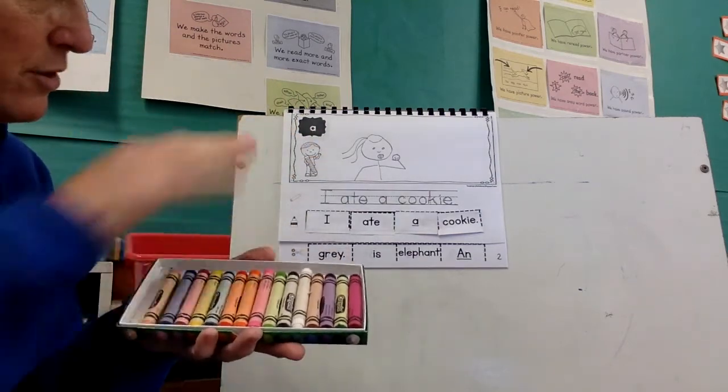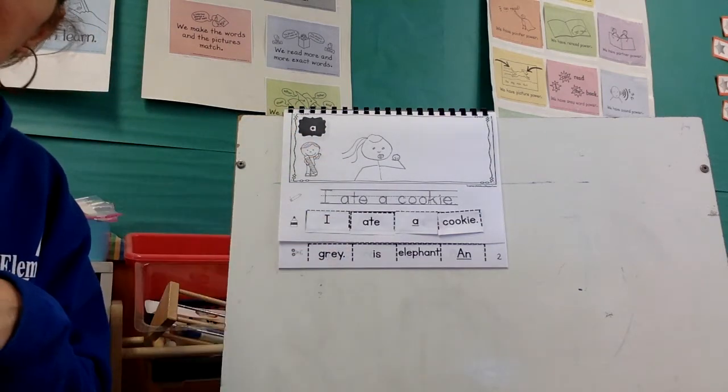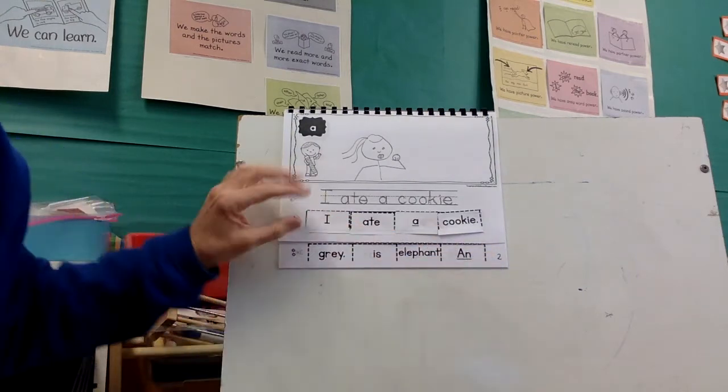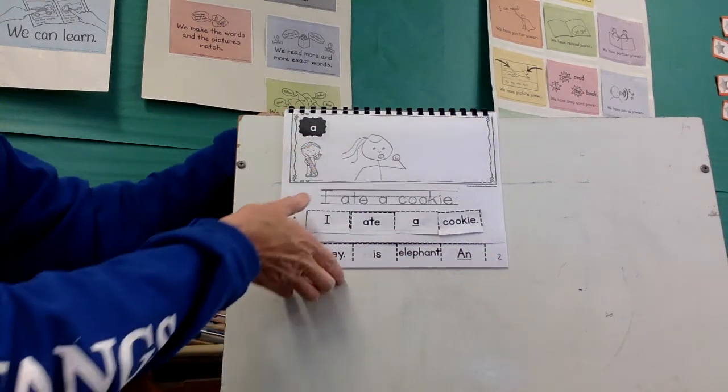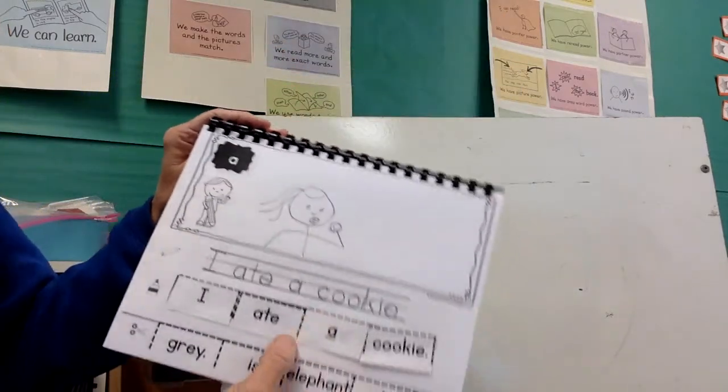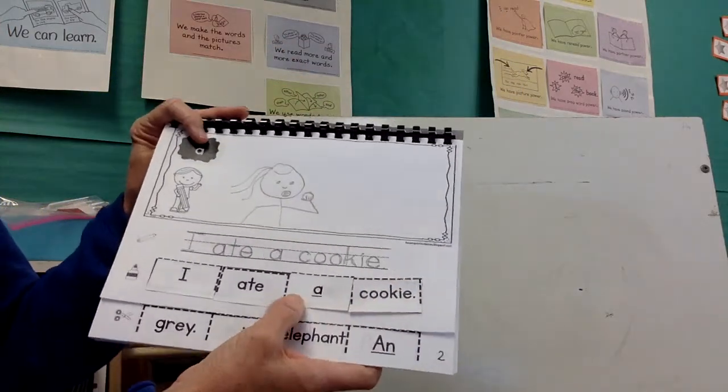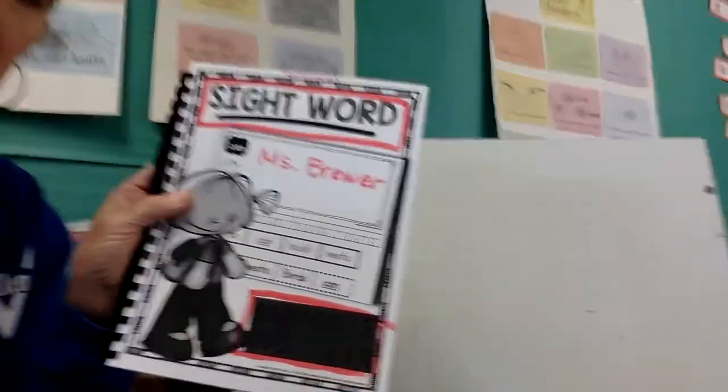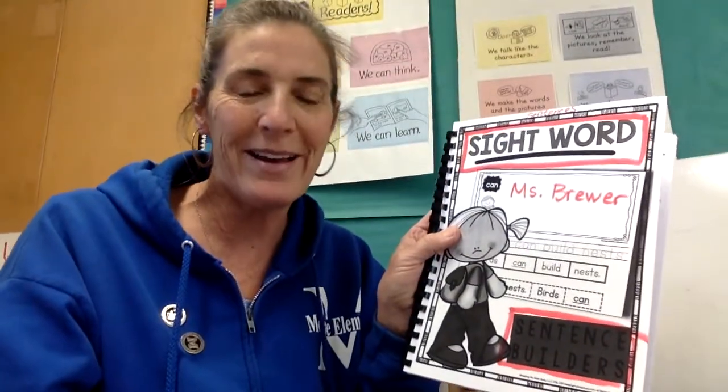If you want, you can color in your picture. You don't have to. Now the next time we do this, you can see that page two is already showing for when we get to page two. Be careful when you close your book in case there's any glue that needs to dry. That is the sight word sentence builder book and how you do it.